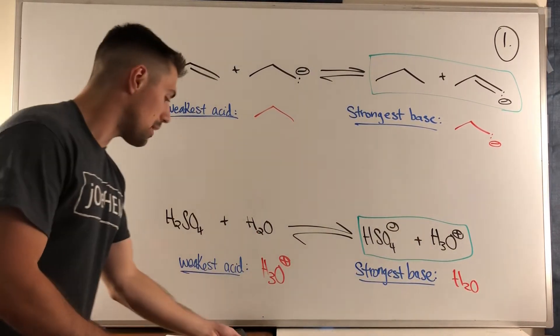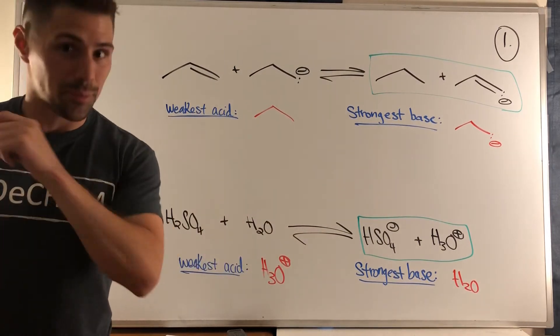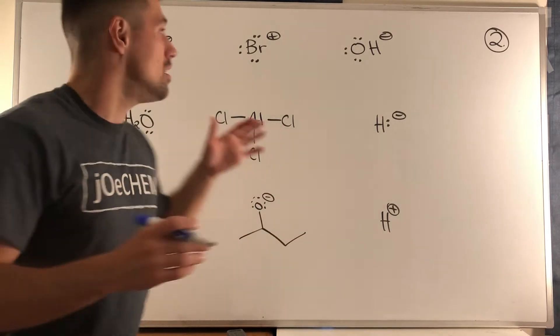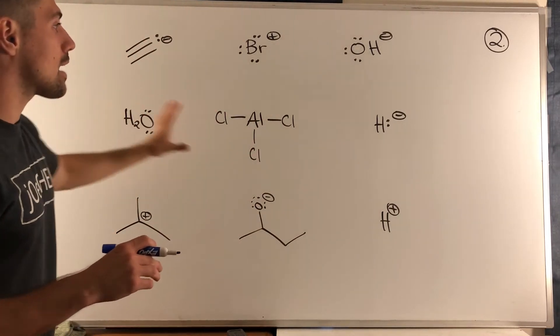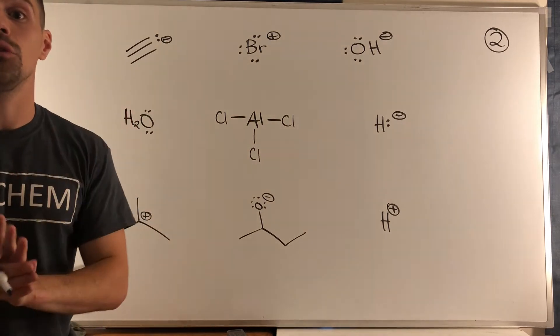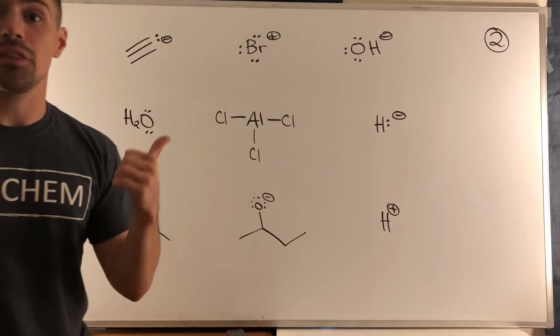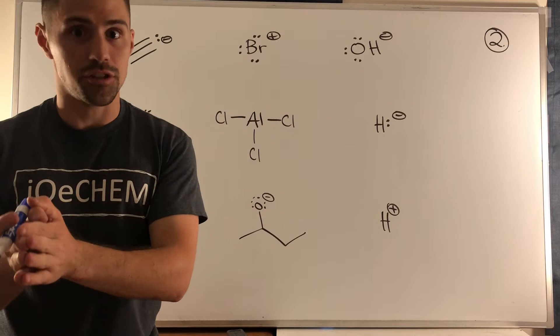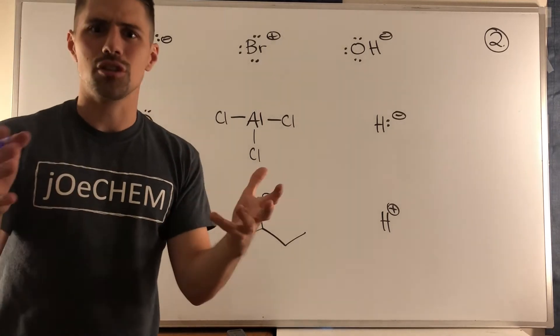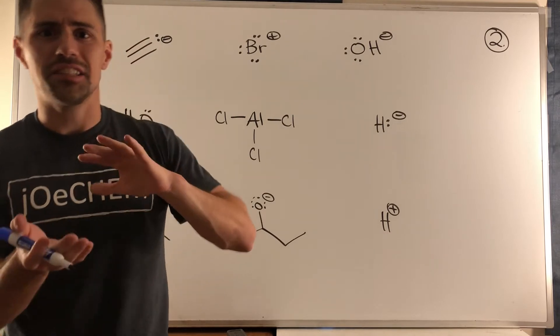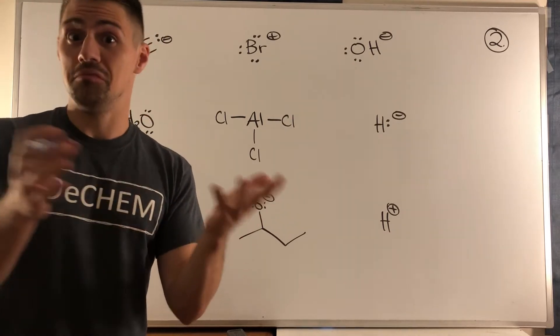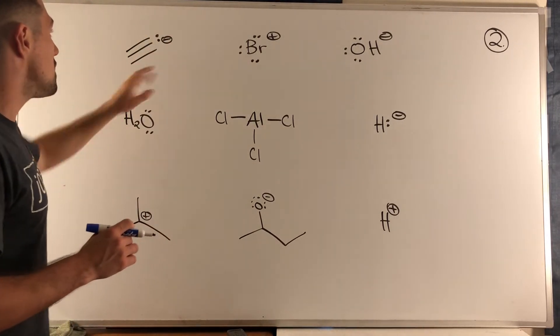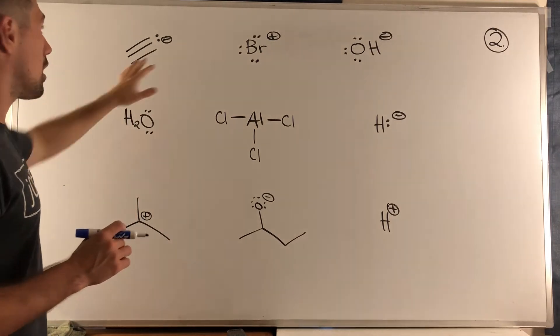Okay gang, sorry for that little hiccup. On to problem two. So in problem two, all we're doing is labeling - so easy work. I have nine molecule structures up here for you and all we need to do is label them with the new terminology we learned, whether this thing is a nucleophile, a lover of positive charge, or an electrophile, a lover of negative charge. So really we need to just look at the makeup of the structure or the molecule and see is it positive, is it negative, or is it partial positive, is it partial negative?